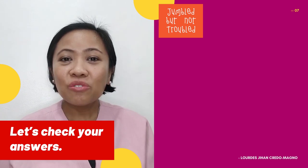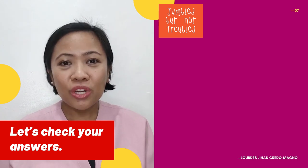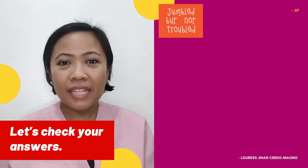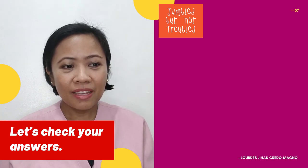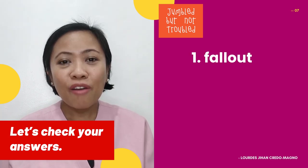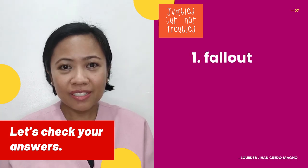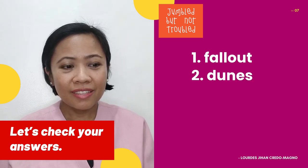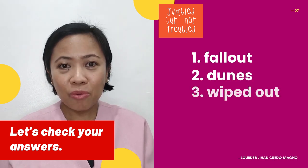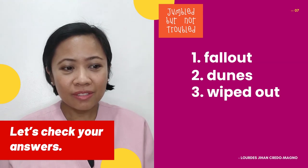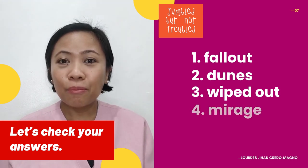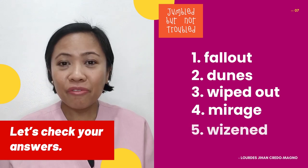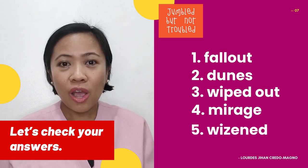Now let us read the words again. Repeat after me. Number 1: fallout. Number 2: dunes. Number 3: wiped out. Number 4: mirage. Number 5: wisen. We are now ready to discuss the story.